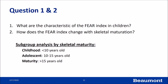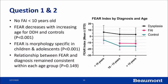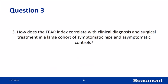Regarding the characteristics of the FEAR index in children and how it changes with maturation: we divided children into three categories — less mature (under 10), adolescents (10 to 15), and mature (over 15). We found no patients diagnosed with impingement under 10 years of age. The FEAR index generally decreases with increasing age for both dysplastic patients and the control group, is morphologically specific in children and adolescents, and remained consistent between each age group.